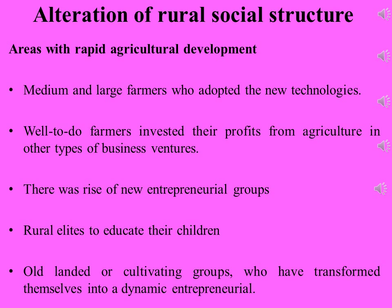In several agriculturally rich areas such as coastal Andhra Pradesh, West Uttar Pradesh, central Gujarat, and many others, well-to-do farmers belonging to the dominant class started investing their agricultural money into other businesses. This process of diversification gave rise to a new entrepreneur group that moved out of rural areas and developed towns into great developed regions.